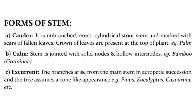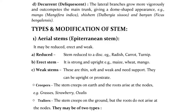C. Excurrent — the branches arise from the main stem in acropetal succession and the tree assumes a cone-like appearance, e.g., Pinus, Eucalyptus, Casuarina, etc. D. Deliquescent — the lateral branches grow more vigorously and outcompete the main trunk, giving a dome-shaped appearance, e.g., Mango (Mangifera indica), Shisham (Dalbergia sissoo), and Banyan (Ficus bengalensis).